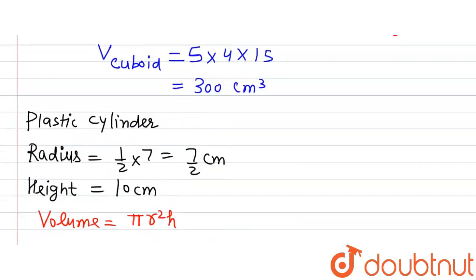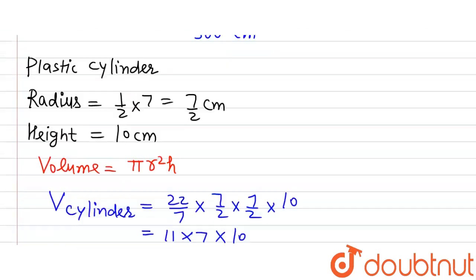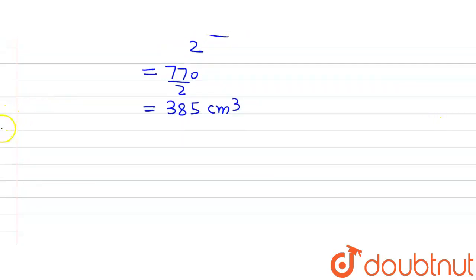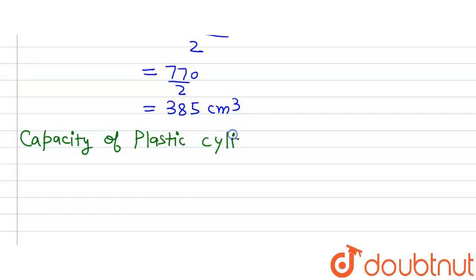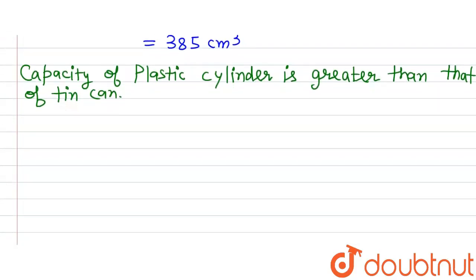Now we were asked which of the two has greater capacity — by capacity we mean which has greater volume. The cuboid has 300 cm³ capacity whereas the cylinder has 385 cm³ capacity. This means the capacity of the plastic cylinder is greater than that of the tin can.